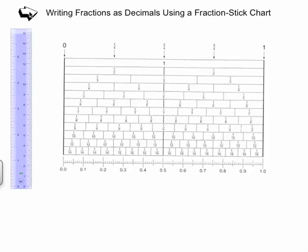The first step is to use the thirds row and locate the fraction two-thirds. Here's the thirds row. Count the one-third bars from left to right. Two-thirds is at the right edge of the second bar. One-third, two-thirds.